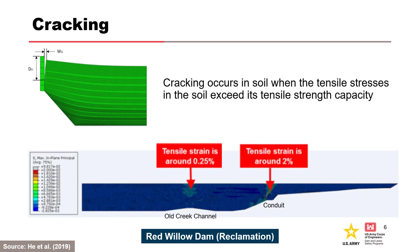When an embankment dam is constructed, differential settlements occur across the valley, resulting from parts of the dam being higher than others, settling more as the dam is constructed. This can lead to horizontal strains and potentially cracking or low-stress zones susceptible to hydraulic fracture. This is most likely to occur where the abutments are steep, where there is a step in the foundation profile, or where there is compressible soil in part of the foundation.